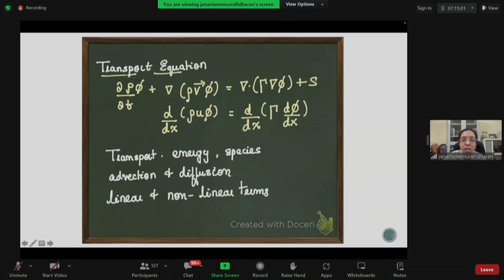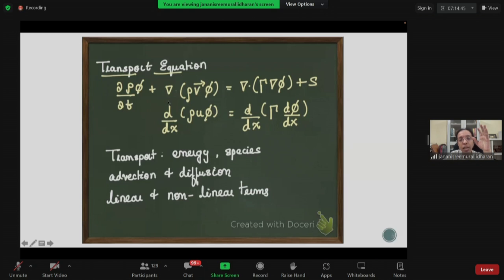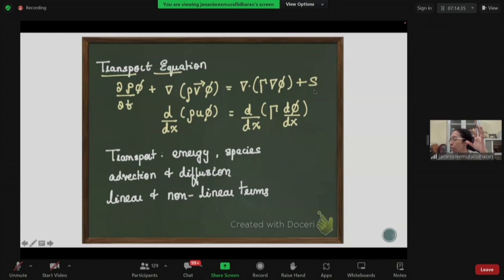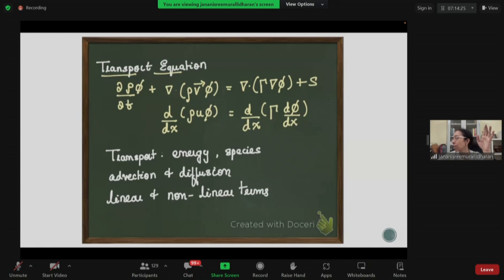This equation is called the transport equation. I have not shown whether it is for temperature or momentum — I have put a common term called phi. What are the terms in a transport equation? There is a transient term, there is a divergence which is advection. What we are saying is: whatever change in this control volume is the change within the volume — the first term — plus the bulk movement, the diffusive movement, and whatever additional source is created.